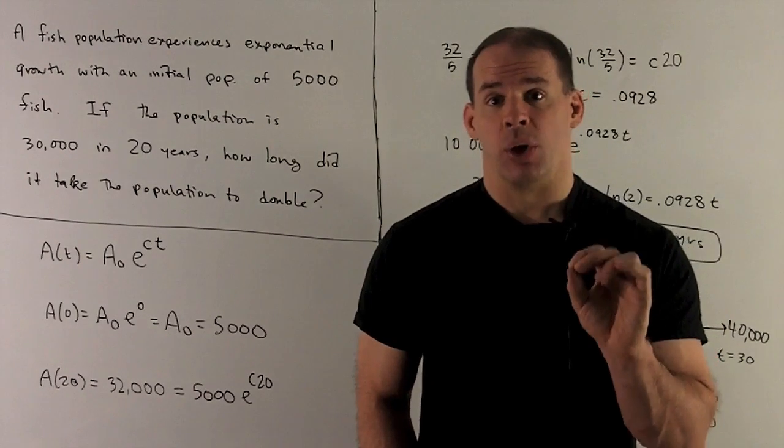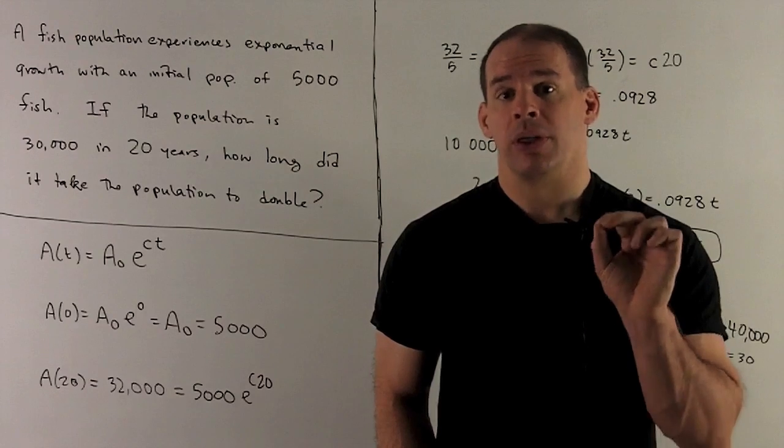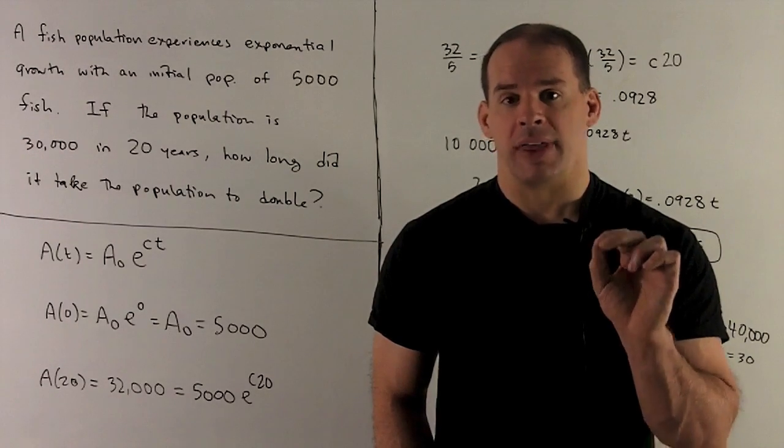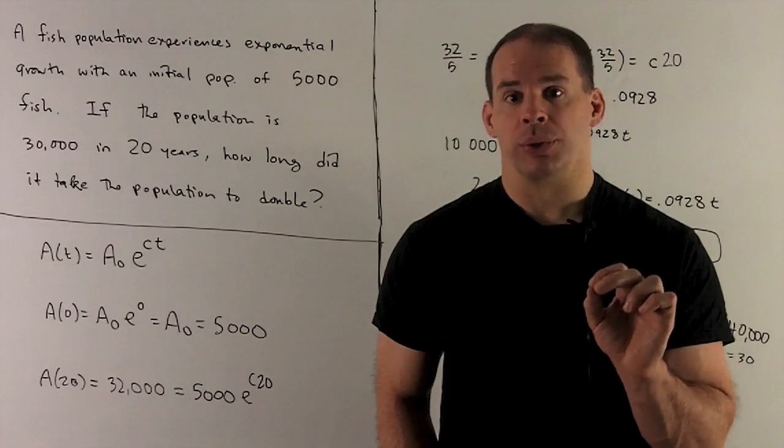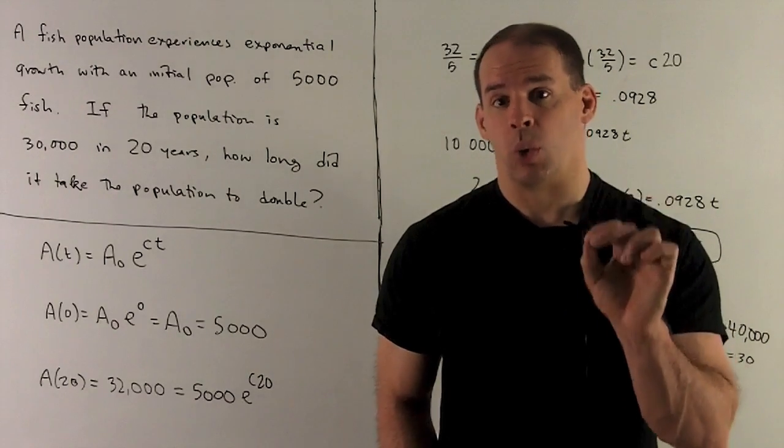Next, I'm told at t equal to 20, our population is equal to 32,000. So that means 32,000 equals 5,000 e to the c times 20.